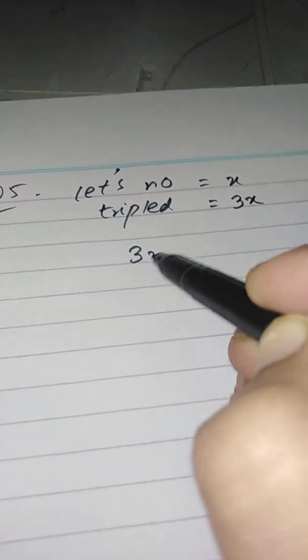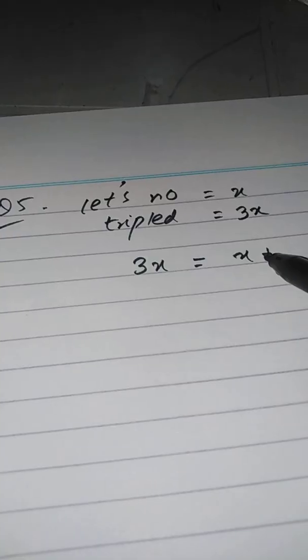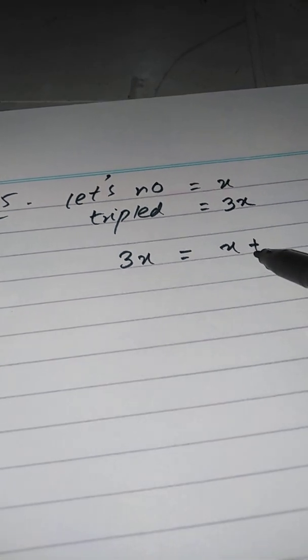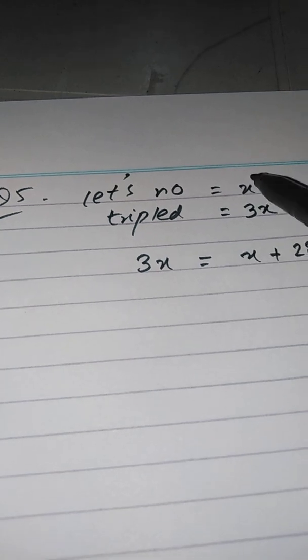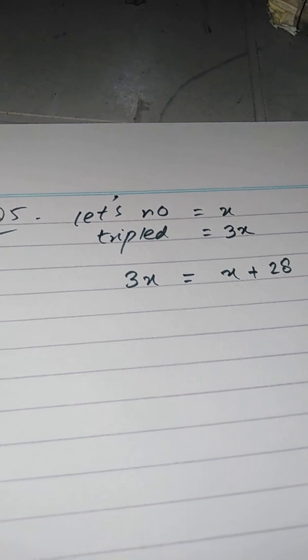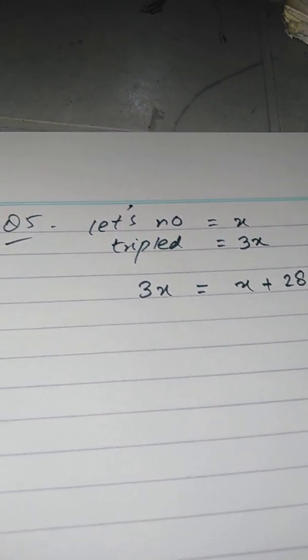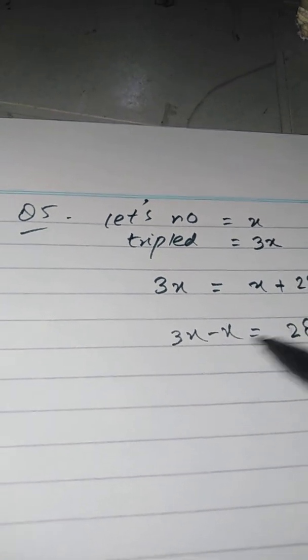Tripled means multiply the number by three, giving three X. The number tripled equals the same result as when 28 is added, so we write: three X equals X plus 28. We can move X to the left side: three X minus X equals 28, which gives two X equals 28.